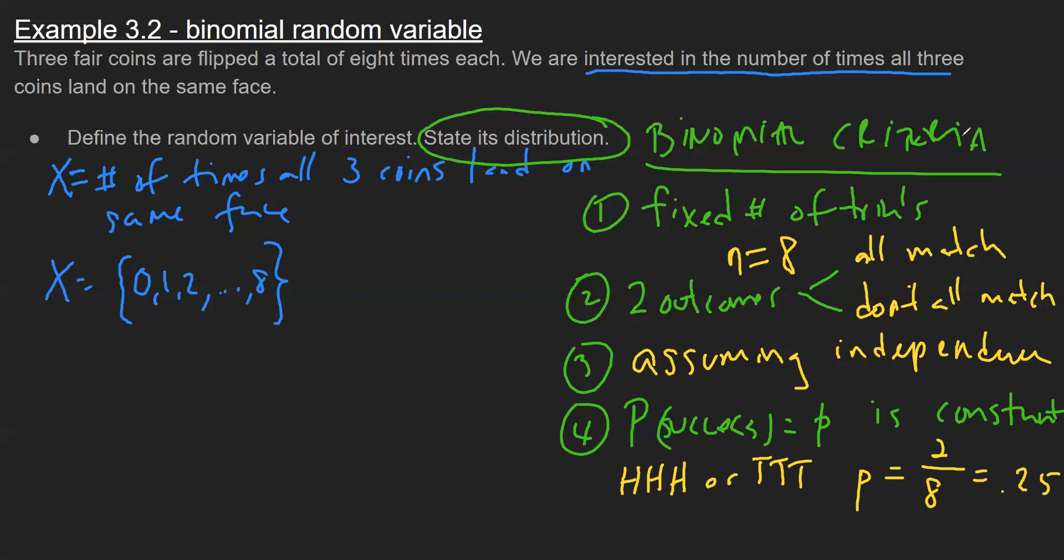The notation we use to illustrate the distribution is we use our letter X, draw this tilde, the notation that tells us it behaves after a well-defined distribution, and then generally the abbreviation. I'll highlight the parameters that uniquely define this problem: eight and p is 0.25. That is the distribution.